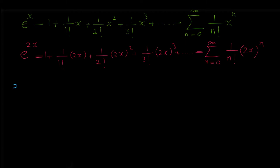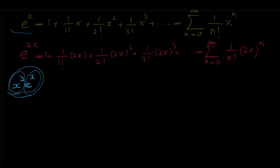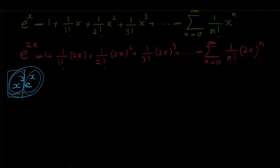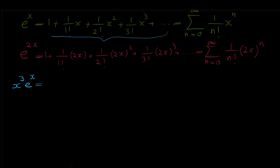We also want to find the Maclaurin series of the function x to the power of 3 times e to the x. Note that the difference between this function and e to the x is that here e to the x is multiplied by x to the 3. So for finding the Maclaurin series of this function, we can multiply the Maclaurin series of e to the x by x to the power of 3.